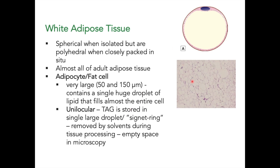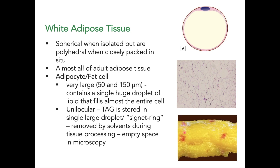When isolated, the cells are spherical, but when closely packed, they become polyhedral. Since these are lipids, they are dissolved by solvents used during tissue processing, so the lipids appear as empty spaces in histological sections. The darker areas are the blood vessels.